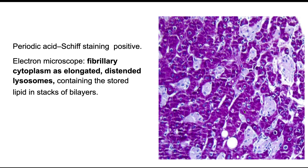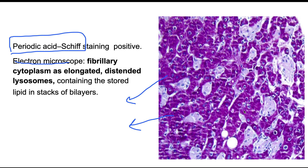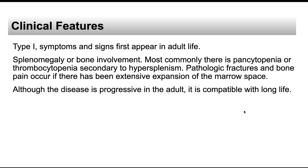An important stain for Gaucher cells is the PAS stain, which shows intense positivity — you can see the magenta color. On electron microscopy, the fibrillary cytoplasm corresponds to distended lysosomes containing stored lipid. This is consistent with Gaucher's disease being a lysosomal storage disease, and distended lysosomes are visible on electron microscopy.